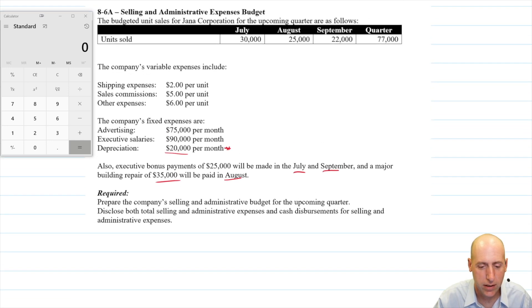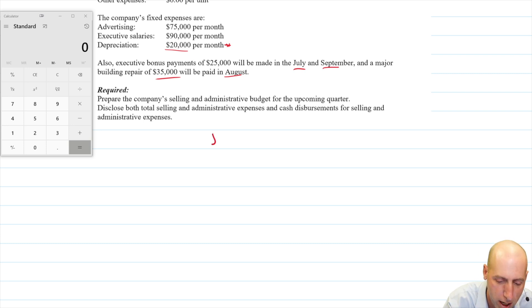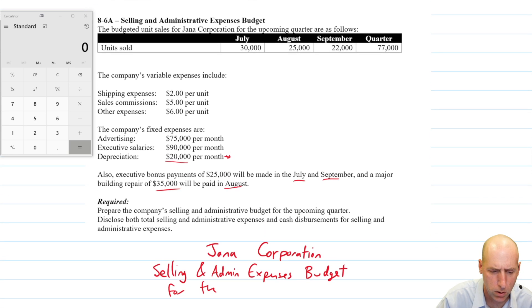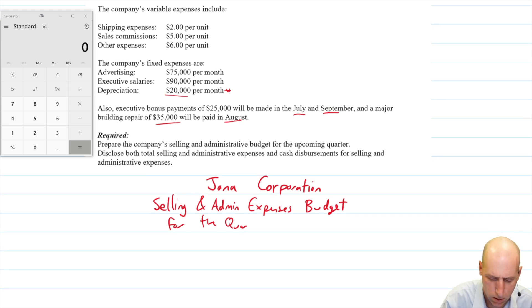We'll start with a title, and the title is three lines, starting with the name of the company, Janna Corporation, Selling and Admin Expenses Budget, and this is for the quarter, for the quarter ended September 30th.